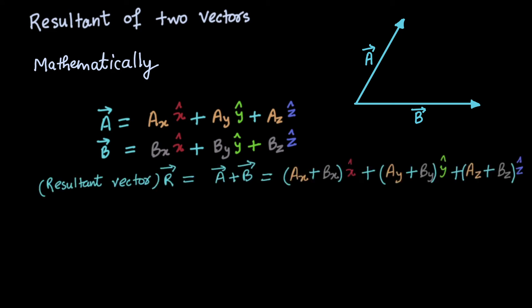The magnitude of the resultant vector will be the square root of (ax + bx) square plus (ay + by) square plus (az + bz) square. Angle between resultant and vector a can be derived from the dot product.